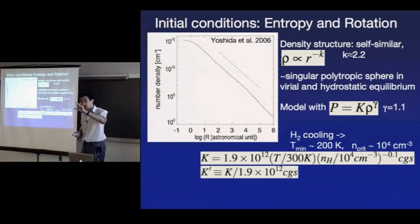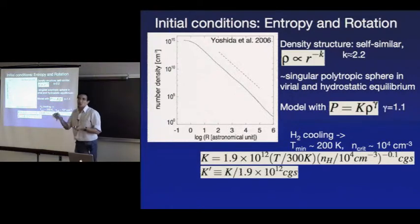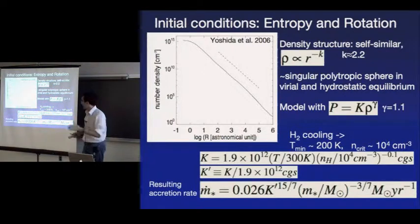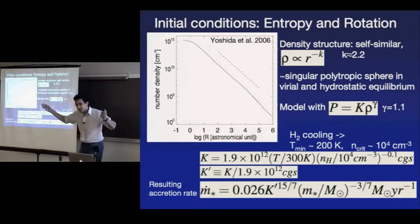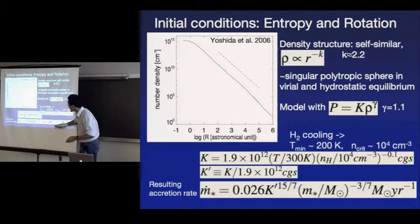That's the critical density for H2 cooling — the ro-vibrational transitions excited by atomic hydrogen collisions. Above that density you're collisionally de-excited at a faster rate than you radiatively decay. Given that structure, you can work out what the collapse rate should be, similar to the solution for a singular isothermal sphere, generalized by Hunter in 1977. There are inward motions — the gas is settling at about a third of the sound speed — so we use Hunter's solution, which predicts the accretion rate as a function of collapsed mass, depending on K'.